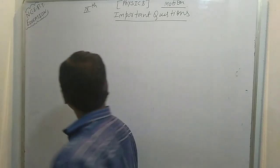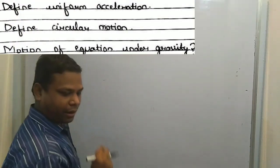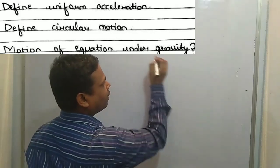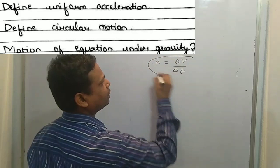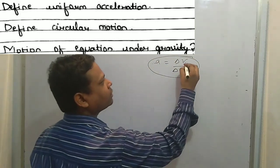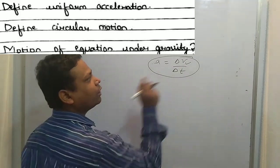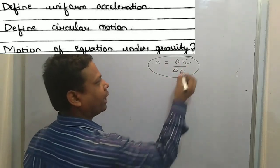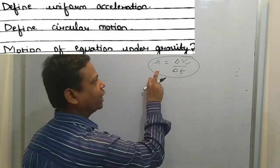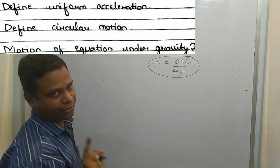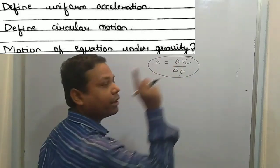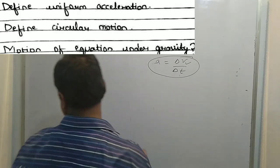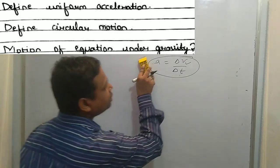First question: uniform acceleration. The rate of change of velocity is known as acceleration. If equal increment or decrement in velocity occurs at equal intervals of time, then it is said to be uniform acceleration.